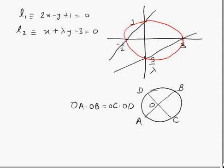In this problem, equations of two lines are given and it is given that these lines are intersecting coordinate axes in points which are concyclic. So you can see this L1 line is intersecting x-axis at minus half and y-axis at one, and